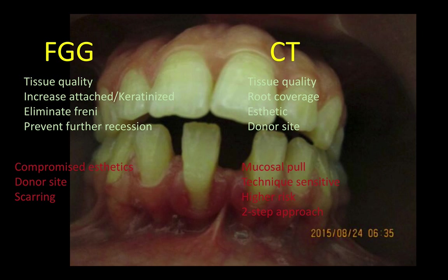Free gingival grafts do provide root coverage, but not as predictably as connective tissue grafts. So I never promise the patient that root coverage is part of the deal. If we get root coverage, it's a bonus. What's important in this region, at least in my opinion, is to improve the tissue quality — it will increase the zone of attached keratinized tissue very predictably, and you'll prevent recession again. It's a very good graft to stabilize the tissue.